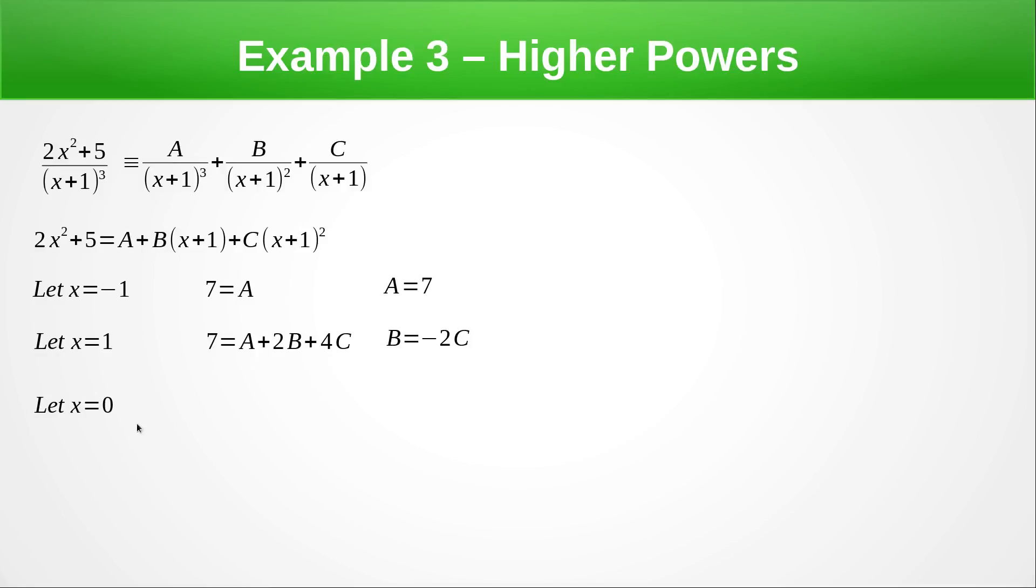So now let's pick another value. Zero is always a nice one to go through because loads of things disappear. We end up with 5 = A + B + C but remember we know that B = -2C so we've got the 7 there so that's going to take that to the other side is -2, -2C + C is -C so C must equal 2. Remember if C = 2 that means that B must be -4 and we put these values back in we get the fraction here in partial fraction form.